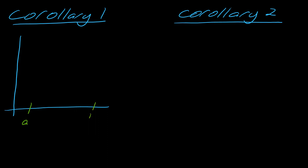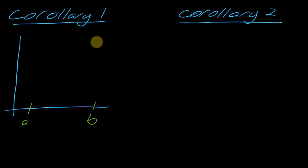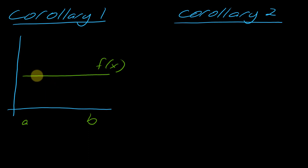Here's my a and b. If f prime of x is just equal to zero, this means that you have something that doesn't increase and it doesn't decrease. That's what it means to have a derivative equal to zero. So what's the only thing that cannot increase or decrease? It would have to be a constant function. So from a to b, it has to be a function that looks like a flat horizontal line — that's my actual f of x. This is the only thing that neither increases nor decreases. That's what the first corollary is saying.